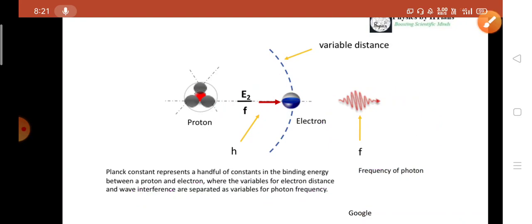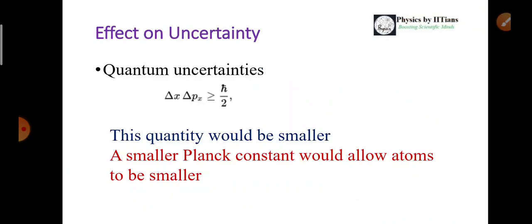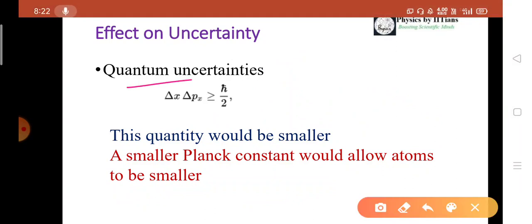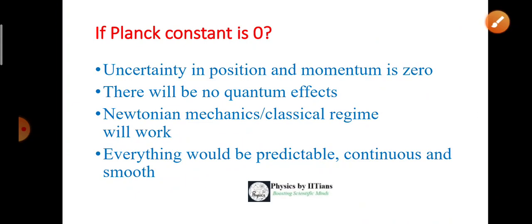Everything will be somehow modified if the Planck constant is changed. First of all, the effect on the uncertainty. We all know that the quantum uncertainties, that is Heisenberg uncertainty, that is Δx into Δpx is greater than equals to h-bar by 2. This quantity will be smaller if the Planck constant gets reduced. So a smaller Planck constant would allow atoms to be smaller. Uncertainties are smaller, so the atoms will be also smaller because mvr equals to n into h-bar. Everything will be smaller with the effect of the reduction in the h amount.